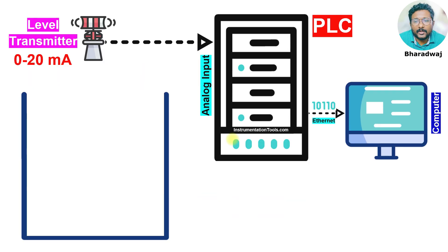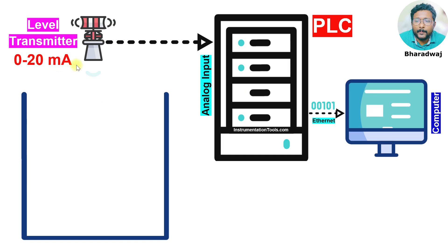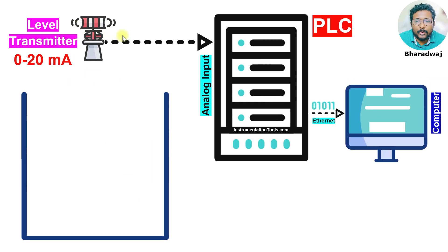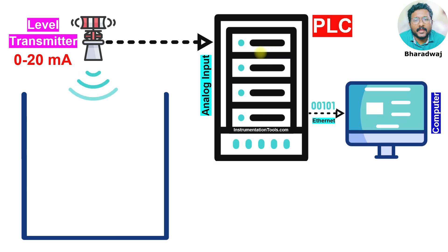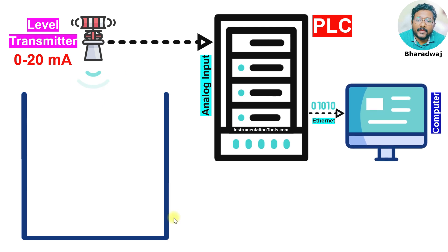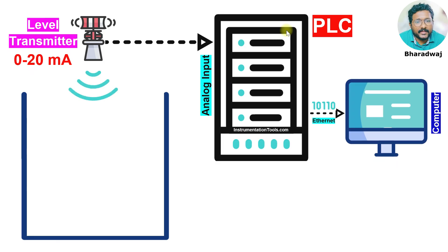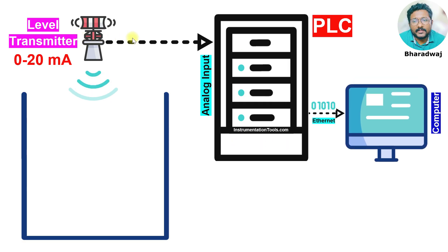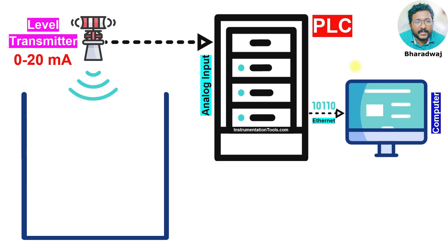I will go to the same example. We have a tank and there is a level transmitter which measures the tank level. This transmitter range is 0 to 20 mA. When the tank level is 0%, the transmitter sends 0 mA to the PLC. If the tank is full, the transmitter sends 20 mA to the PLC. If the tank is 50%, the transmitter sends 10 mA to the PLC, and the PLC calculates the equivalent tank level and displays it on the computer.